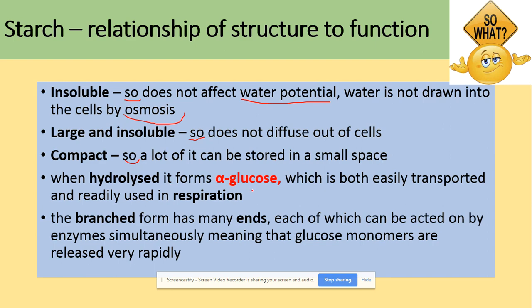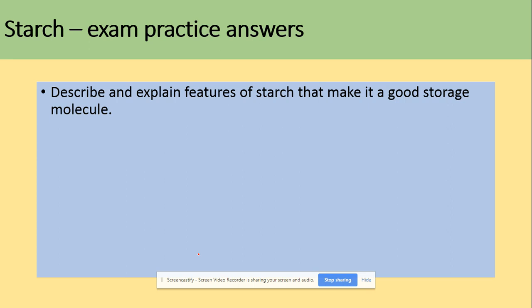When starch is hydrolyzed, it will form alpha glucose, which can then be easily transported and used for the process of respiration. Also, it's branched, so it has many ends, each of which can be acted on by enzyme action, meaning that glucose monomers are released very rapidly. When looking at past paper questions, they may ask you to describe and explain features of starch that make it a good storage molecule.